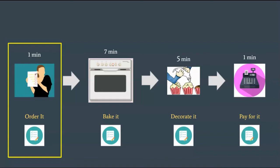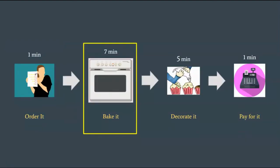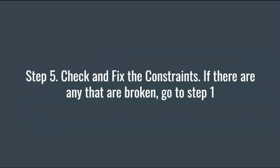We've subordinated everything to the constraint. What now? Step 4: to alleviate the constraint means to find the constraint and throw extra resources at it. Since the baking step is the constraint, now it's time to add more resources to it by buying a new oven. This reduces the time to bake a cake from 7 minutes to 3 and a half minutes. Step number 5: check and fix constraints. This is the adjust step.